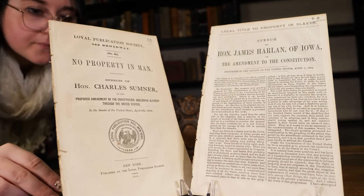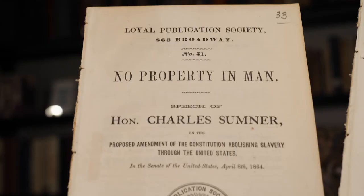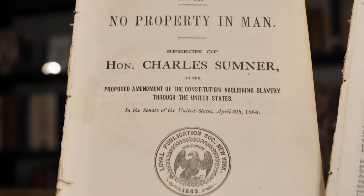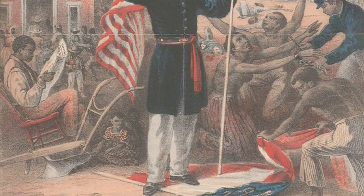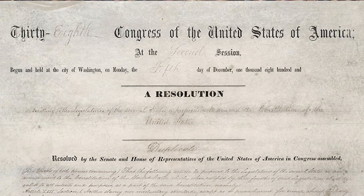By April of 1864, the U.S. Senate passed a proposed constitutional amendment banning slavery nationally. The House of Representatives struggled to pass the amendment due to the number of Democrats who refused to support it. Lincoln pushed representatives to consider the amendment, speaking to some of them one-on-one.